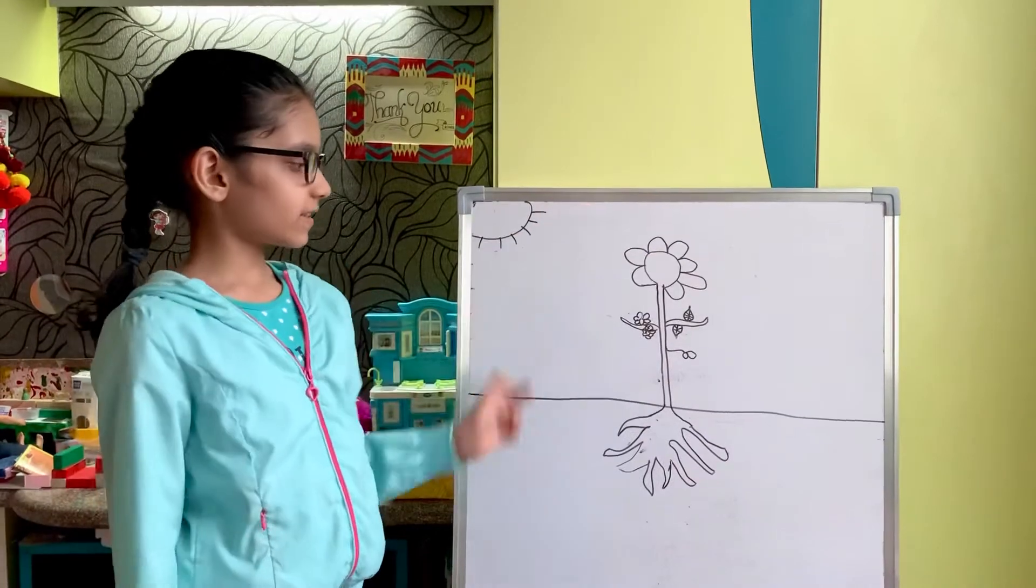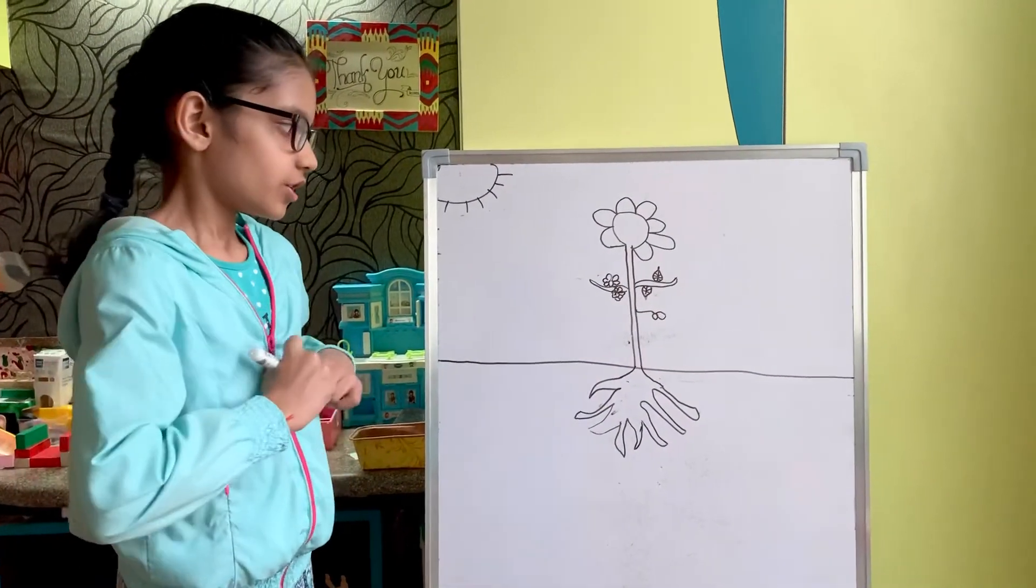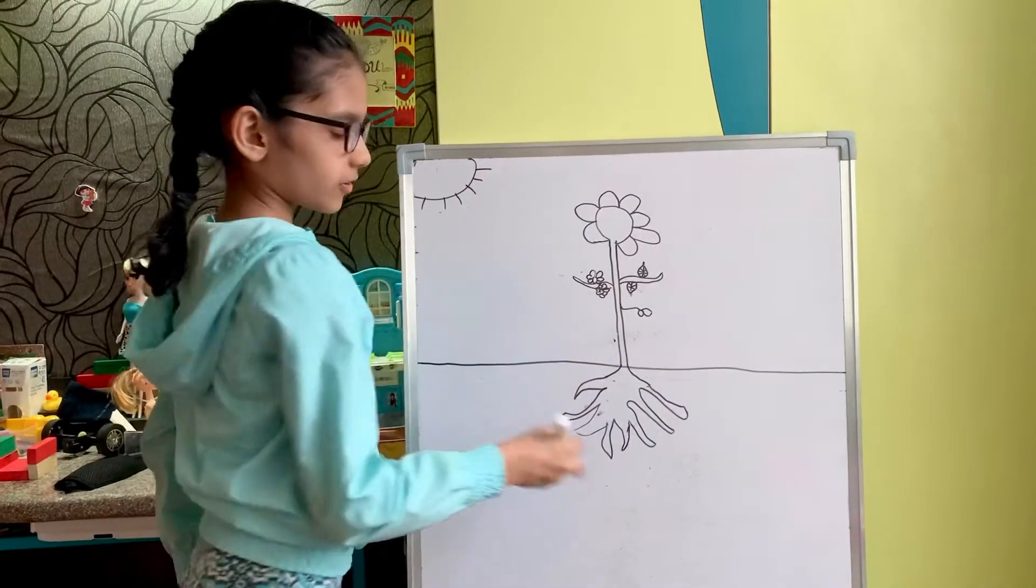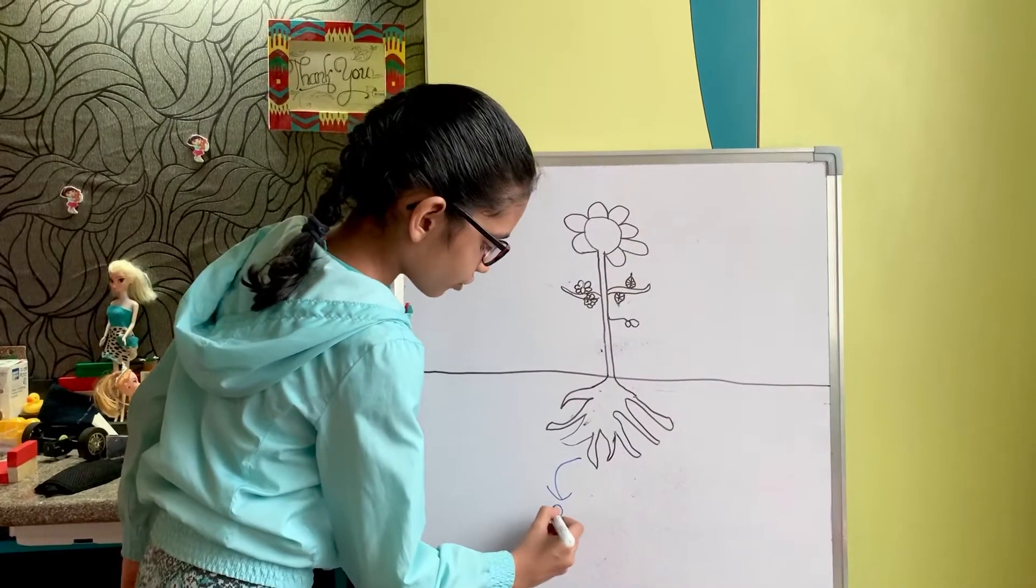So here as you see is a daisy plant. It's actually a flowering plant. It includes all the parts of the plant we are going to learn. The first part is the root.